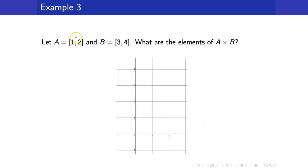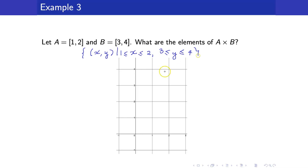Here's another example. Suppose that A is the closed interval [1,2] and B is the closed interval [3,4]. The elements of A cross B would be the set of all ordered pairs (x, y) such that x is in A, so x is between 1 and 2, and y is an element of B, so y is between 3 and 4. Therefore, A cross B is this square region, where elements have x-coordinate from 1 to 2 and y-coordinate from 3 to 4.